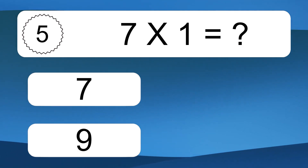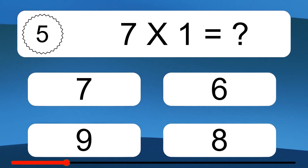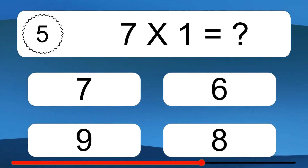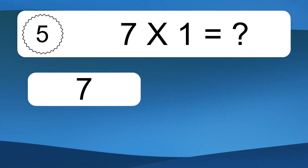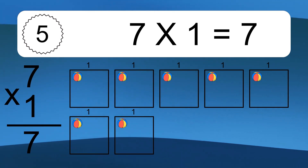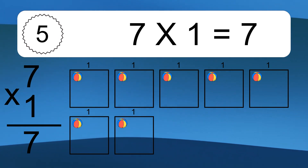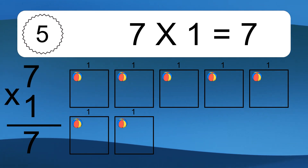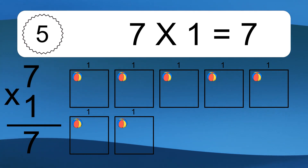7 times 1 equals what? 7 times 1 equals 7. We have 7 boxes, and each box has 1 colorful ball inside. If you count all the balls in all the boxes together, you will have 7 times 1 balls. This equals 7 balls.